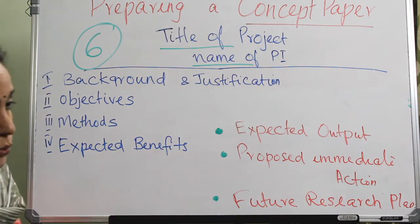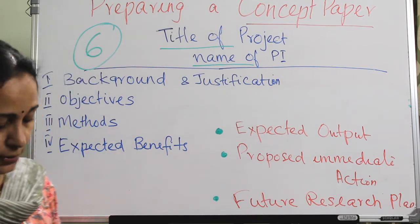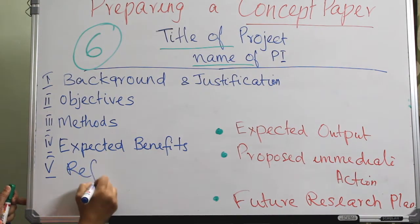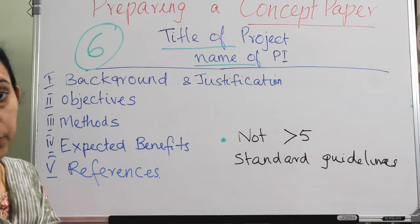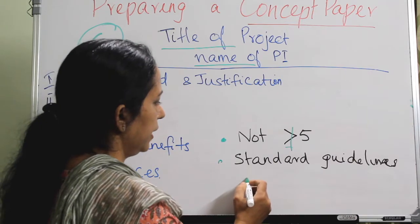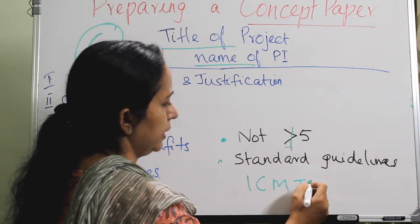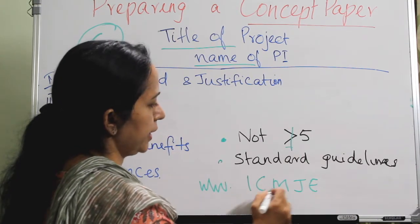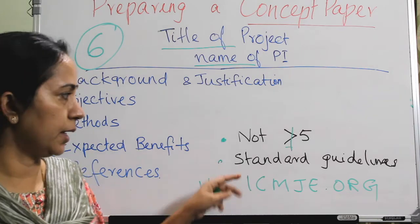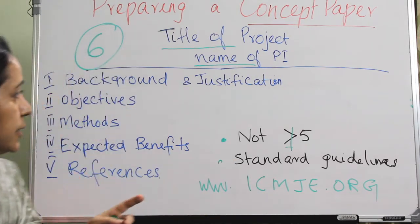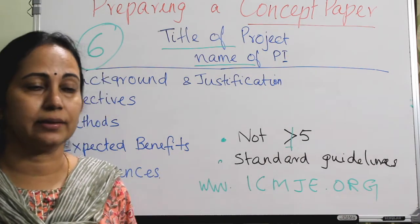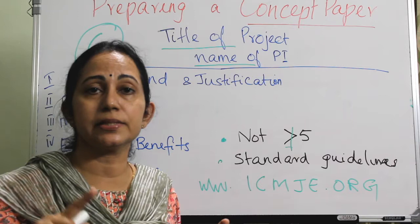The next section is references — no more than five references. You should follow standard guidelines; we usually follow the International Council for Medical Journal Editors at www.icmje.org. You can cite references in the introduction part and also in the methods section, and always link statements with their references.